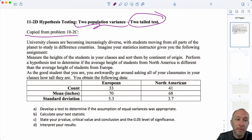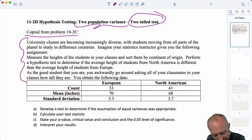This is copied from problem 10.2c so we had gone through this problem some time ago. We were looking at comparing the heights of students and we were given this assignment to compare the average height of students from North America is different from the average height of students from Europe. So there we did a two population t test, so we are comparing the means whether they're equal or not.